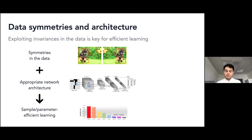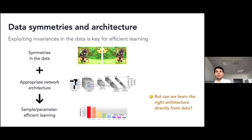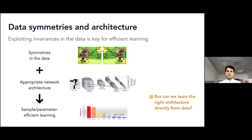For many data types it's not clear what the symmetry is. If I give you amino acid sequences for protein folding, what's the right symmetry to take into account when designing a neural network? The hope or dream in deep learning would be to learn the right architecture directly from the data — to start with a fully connected network, have it see some images, and have it figure out by itself that there's some translation symmetry and it should be convolutional. This would be the goal: learning data symmetry and architecture simultaneously.